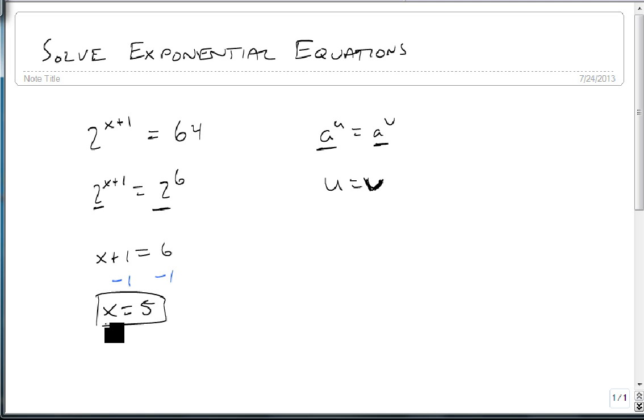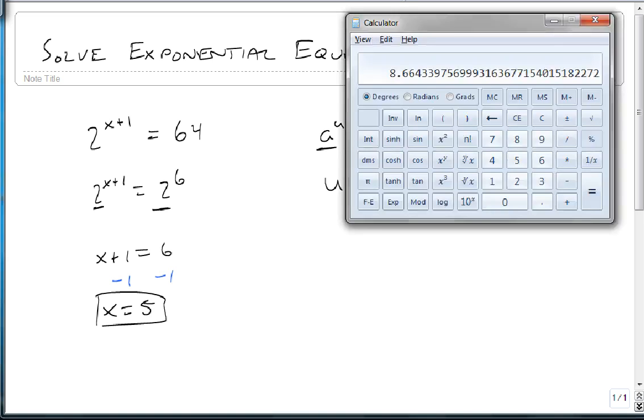So as long as x equals 5, then 2 to the 5 plus 1 will equal 64 and we can check that. 2 raised to the parenthesis 5 plus 1 close parenthesis equals 64. So we know that we got it right.